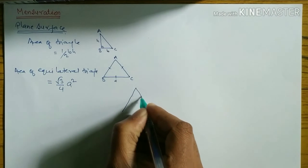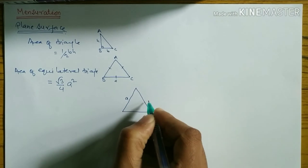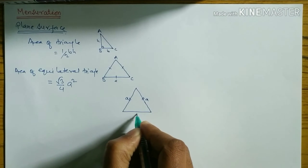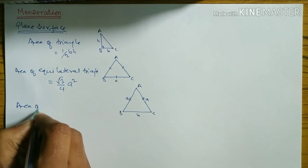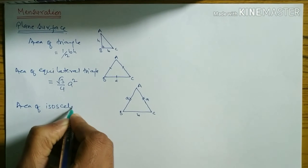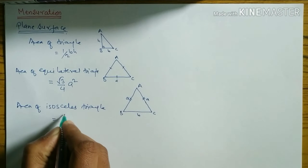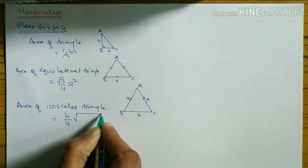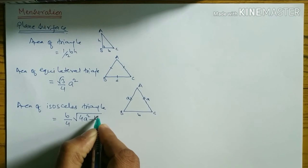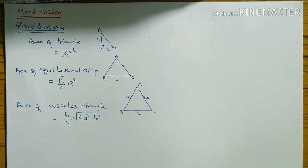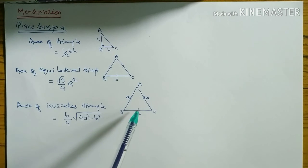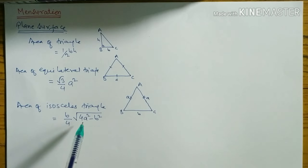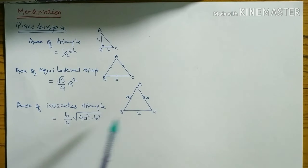Next is the isosceles triangle, where two sides are equal. The area of isosceles triangle formula is: b/4 × √(4a² − b²), where b means base and a means the equal side.